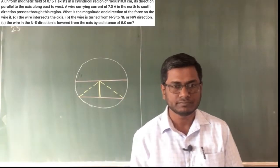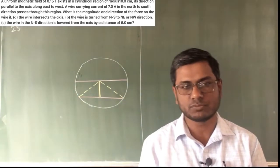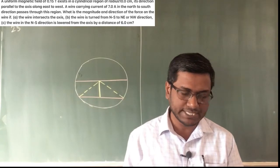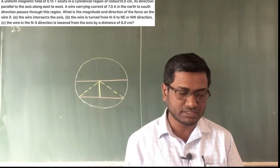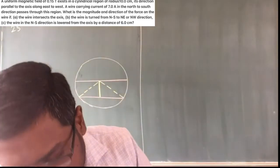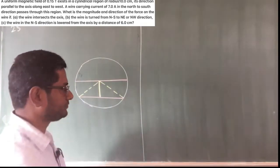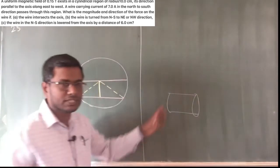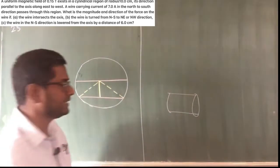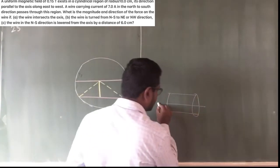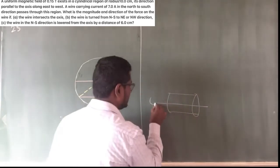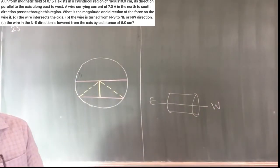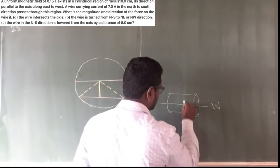This is a complex problem. There is a small diagram on the board. A uniform magnetic field of 0.15 Tesla exists in a cylindrical region — it is in the form of a cylinder. There is an axis of that cylinder, and the axis of the cylinder is directed east to west. The radius is 10 cm.